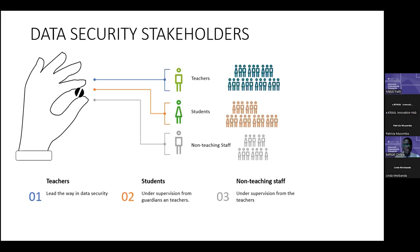From an educational point of view, stakeholders are divided into three groups: teachers, students, and non-teaching staff. The non-teaching staff includes cooks, cleaners, janitors, and people from the procurement team. Students are the learning personnel. In data security, teachers are the main stakeholders to protect the data — they lead the way and are the beacon which people follow. Students work under supervision from guardians and teachers, and the non-teaching staff also take the lead from the teachers.